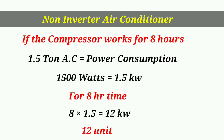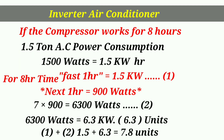For a 1.5 ton AC, the power consumption is 1500 watts, which is 1.5 kilowatts per hour. For the non-inverter at fixed speed, 1.5 kilowatts multiplied by 8 hours equals 12 kilowatts. For the inverter AC, the compressor runs at variable load versus fixed load — 2500 watts and 1.5 kilowatts per hour.